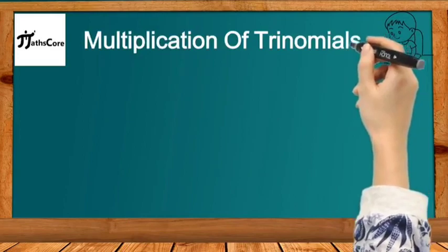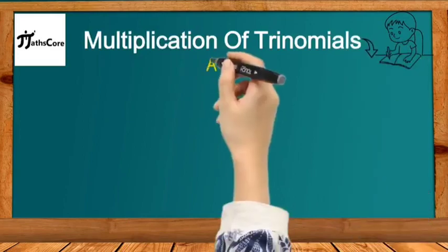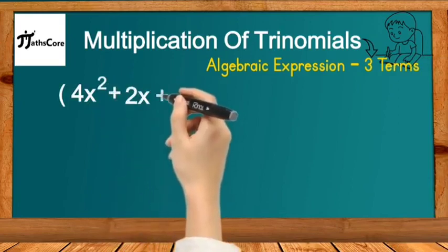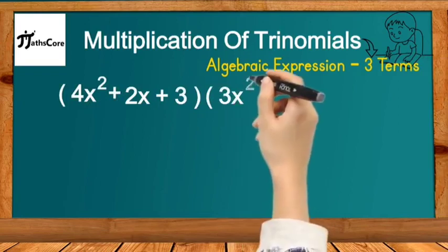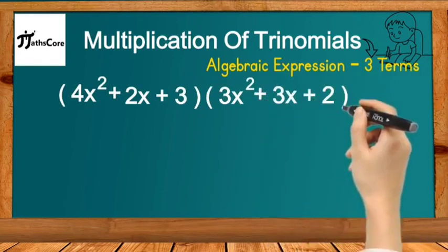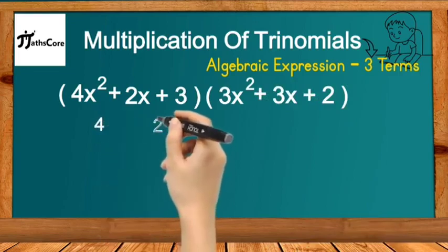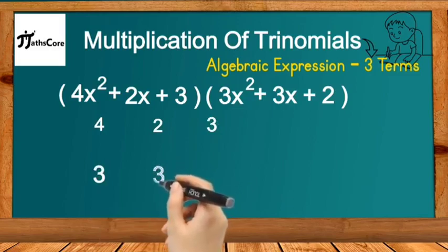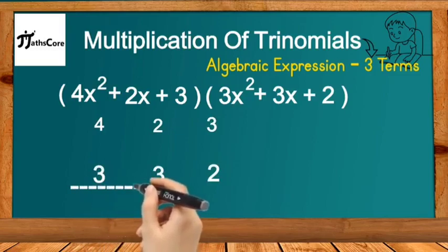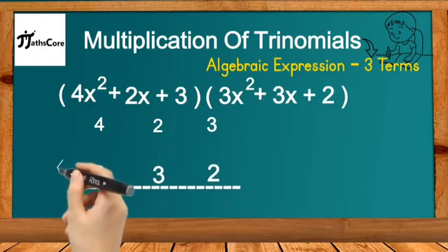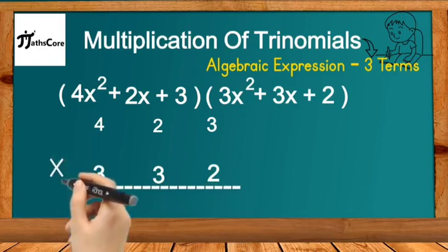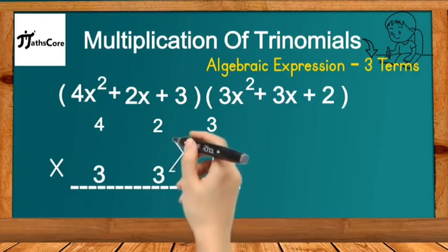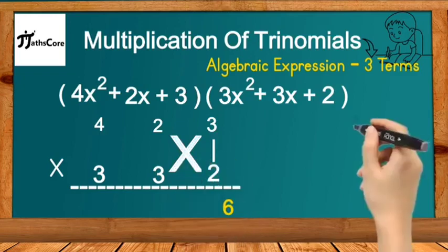Now let's look at multiplication of trinomials. A trinomial is an algebraic expression with three terms. The example is: (4x² + 2x + 3) multiplied by (3x² + 3x + 2). We use the same Vedic method. Write the coefficients of the first trinomial: 4, 2, 3, and of the second: 3, 3, 2. This is equivalent to multiplying three-digit numbers, so we use the concept i × ✳ × i. First, multiply the unit place numbers: 3 multiplied by 2 is 6. Write 6 in the answer.